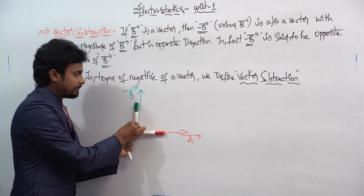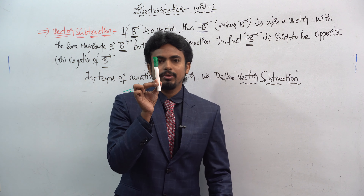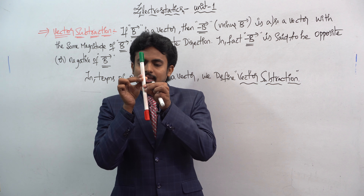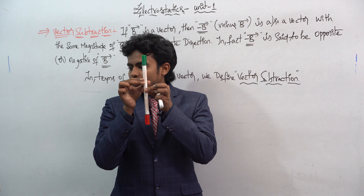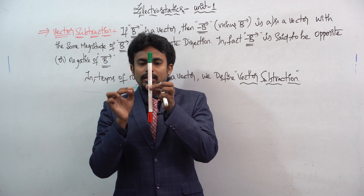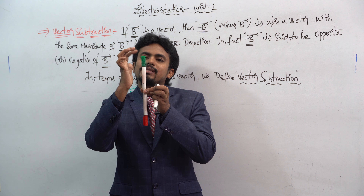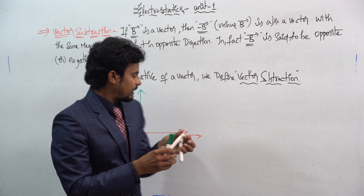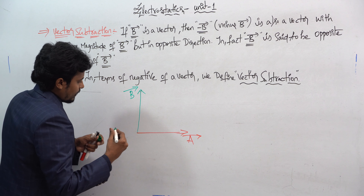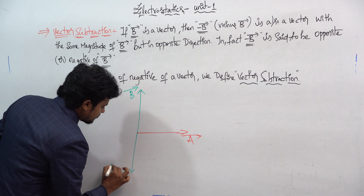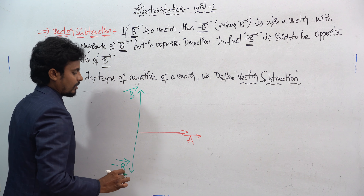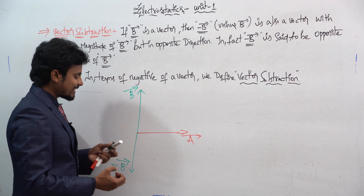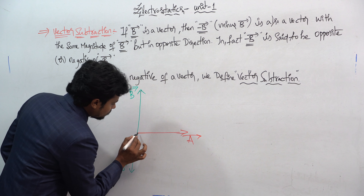Here I will take the green vector b-bar, but you can see the downside as well. On the downside, b-bar plus b-bar — what will happen? This will become minus b-bar.